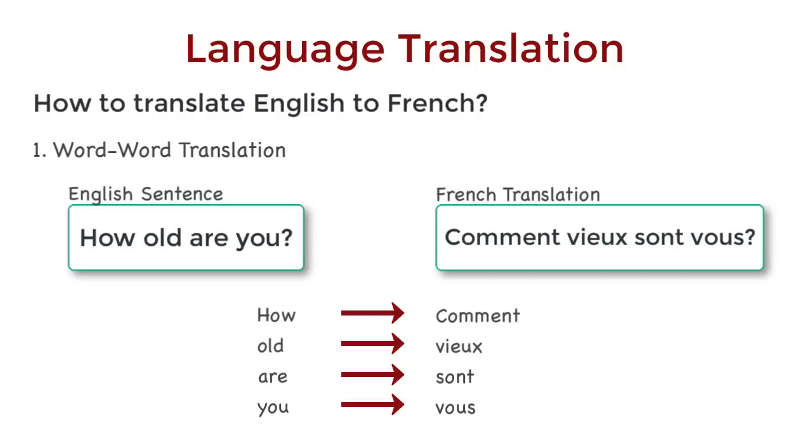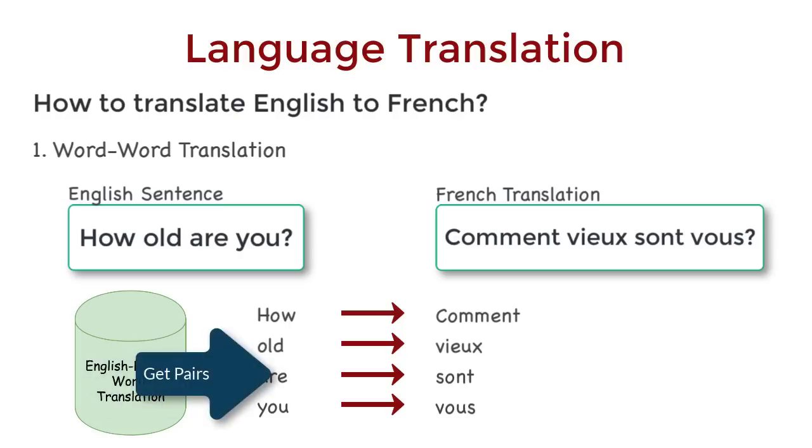It's a simple strategy, and honestly, we don't need machine learning for this. If we just have a curated database with English to French word translations, then we're all set. For every English word, look it up in the database, get the corresponding French word, and repeat this for every word. That's great. But there's a problem with this.